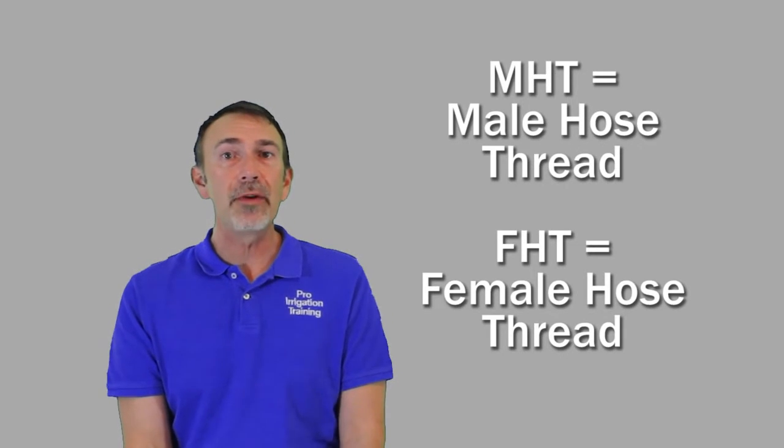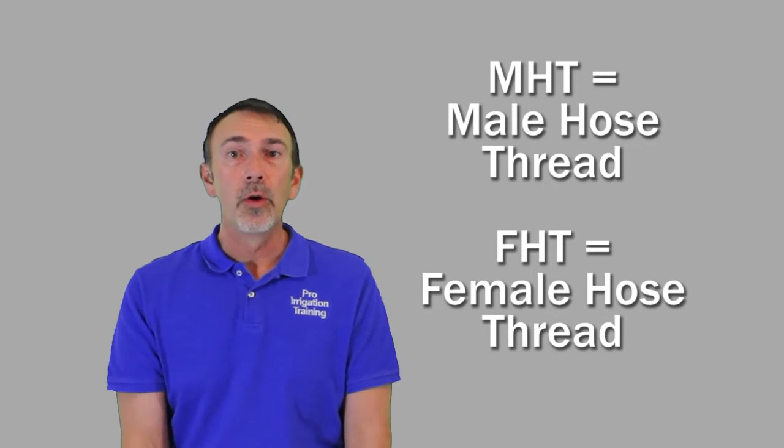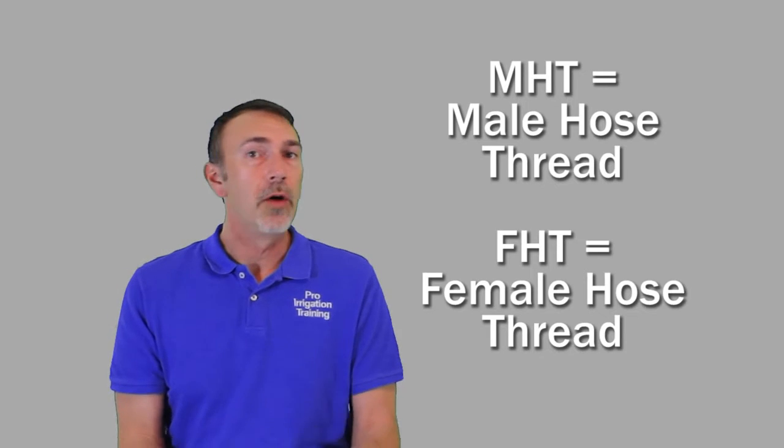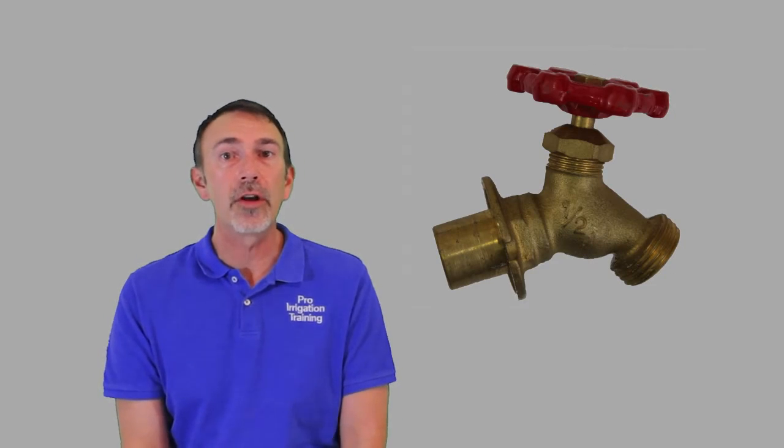So let's talk about the other kind and it's called hose threads. This is the type of thread that you're going to encounter with garden hoses on the side of your house on a hose bib or an external faucet. You also have these hose thread timers that you can use to set up a small irrigation system from a hose bib and those are going to have hose threads.